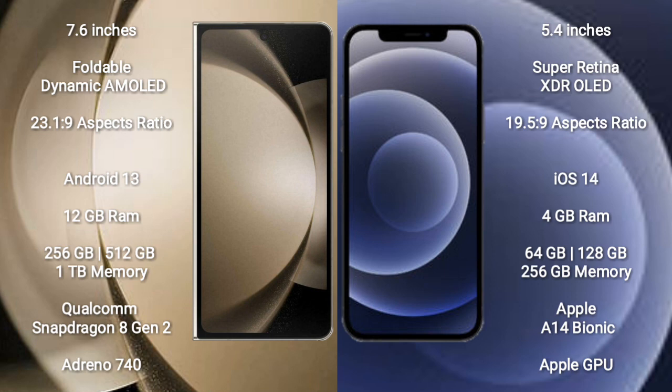iPhone 12 mini comes with 4GB RAM and 64GB, 128GB, or 256GB internal storage options. It is powered by the Apple A14 Bionic processor with an Apple Graphics GPU.